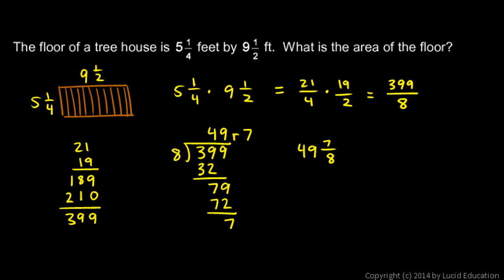That's the area. And if our original number here was 5 and 1 quarter feet, and this was 9 and 1 half feet, and that's what they were in the problem. Feet times feet, then we end up with square feet. 49 and 7 eighths square feet is our answer. That's the area of the floor of the treehouse.